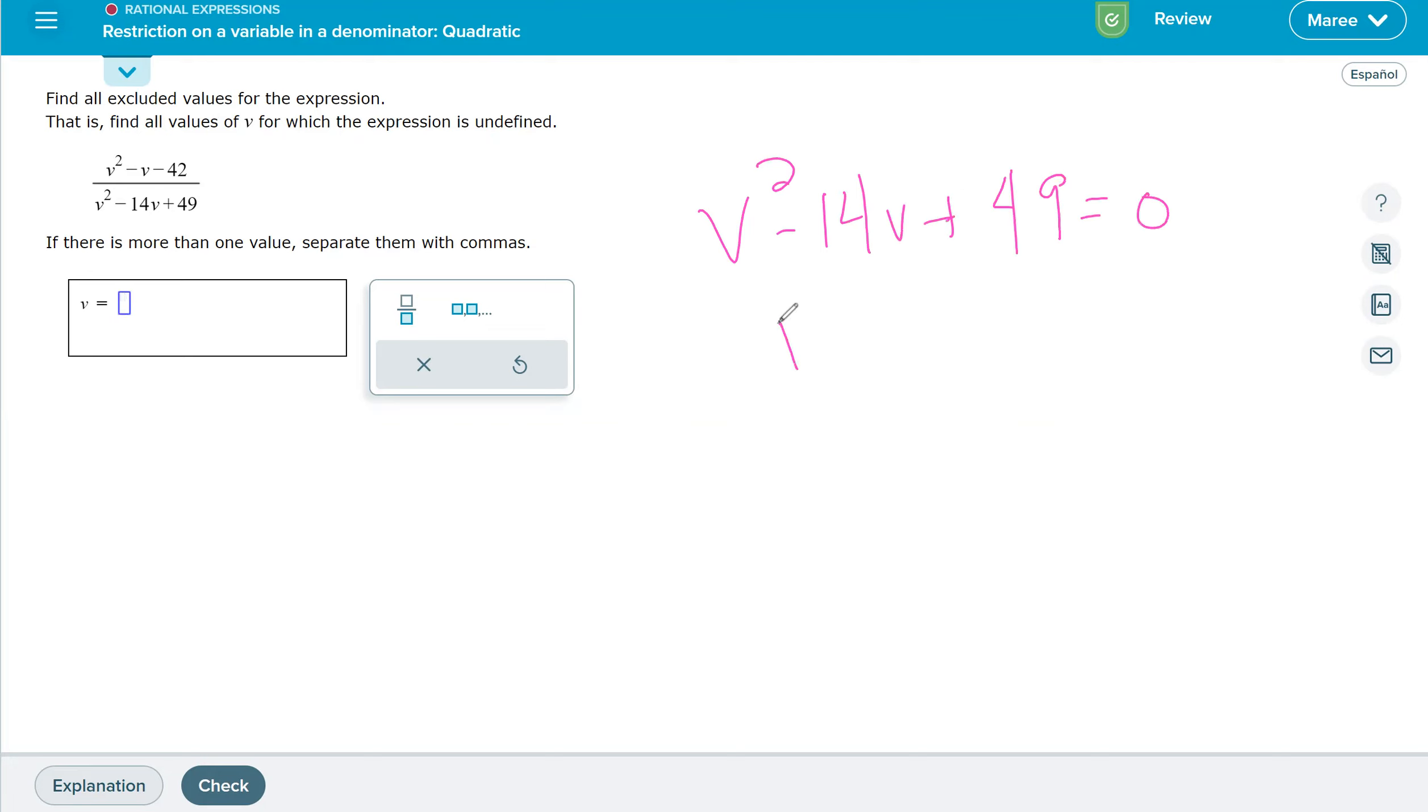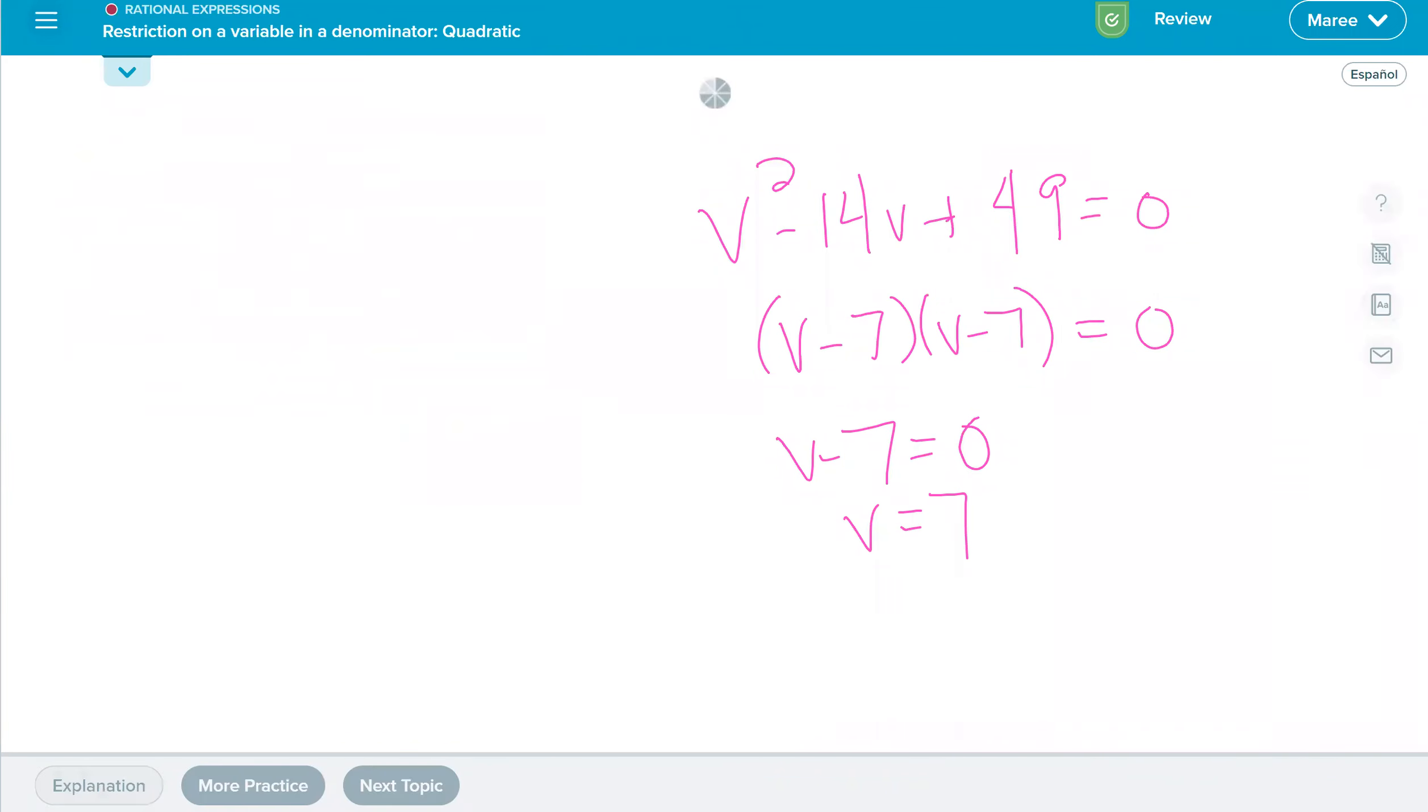This is v minus seven squared, or v minus seven times v minus seven. There's only going to be one zero here because when v minus seven equals zero and v is seven, that's when the denominator will equal zero. And that will be the only answer we get.